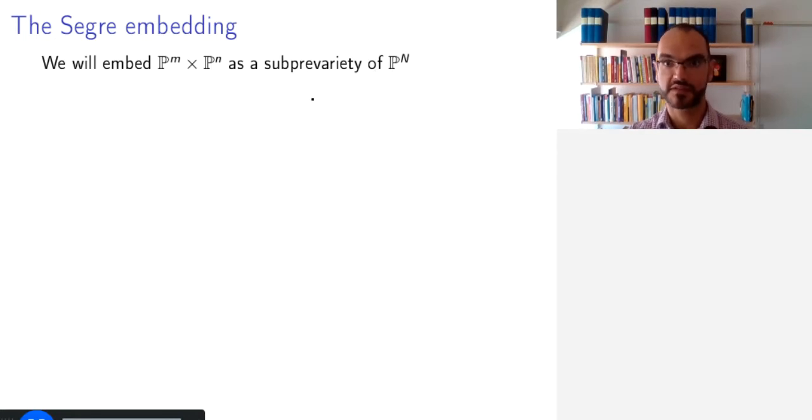For affine space, this was much easier because simply the affine M plus N space is exactly the product of affine M space times affine N space. But for projective space, because of the quotient construction, this will not work immediately, so we need the Segre embedding.